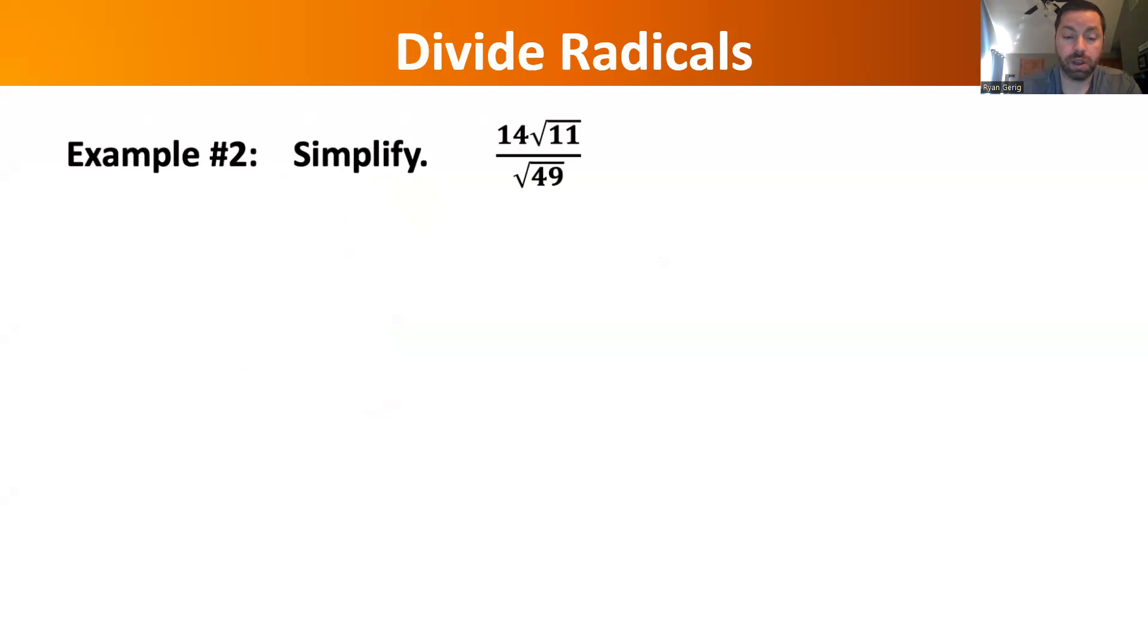How about this one? I've got 14 radical 11 over the square root of 49. Can't really do anything at the top right now. Can't do anything to 11, 11's prime. But the square root of 49 we should know is 7. Now 14 and 7 are both outside the radical, so I can reduce those to 2. 14 divided by 7 is 2 times radical 11, and that's the simplified version of the original problem.